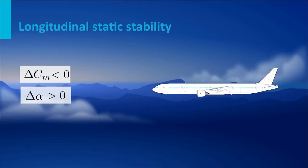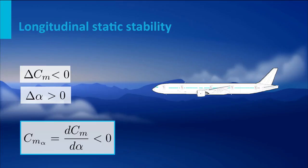The same applies for a nose-down example: for a negative delta alpha we want a positive pitching moment. In other words, the change in pitching moment should have a different sign than the change in angle of attack. We can write this as delta CM divided by delta alpha should be smaller than zero. For very small deviations we write this with a normal d, so dCM/dα < 0. This dCM/dα is also written shorthand as CM_alpha — the derivative of the pitching moment due to angle of attack.